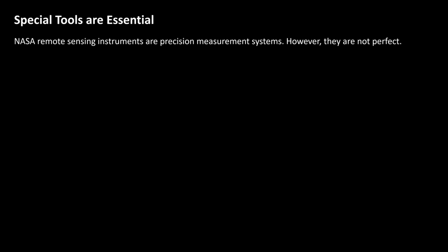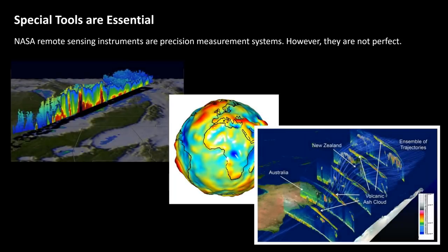But with all this data, it requires special tools in order to be able to use it effectively. NASA's remote sensing instruments are precision measurement systems, but they're not perfect, and they're very varied. In the upper left-hand image, you'll see radar data used to measure precipitation around the globe. In the center image is a gravimetric analysis used to study the geoid and the transport of water, such as in aquifers around the globe. The bottom right-hand image is a lidar image used to study atmospheric chemistry and the transport of aerosols around the planet. The types of instruments we use vary significantly, and each one has its own strengths and weaknesses.